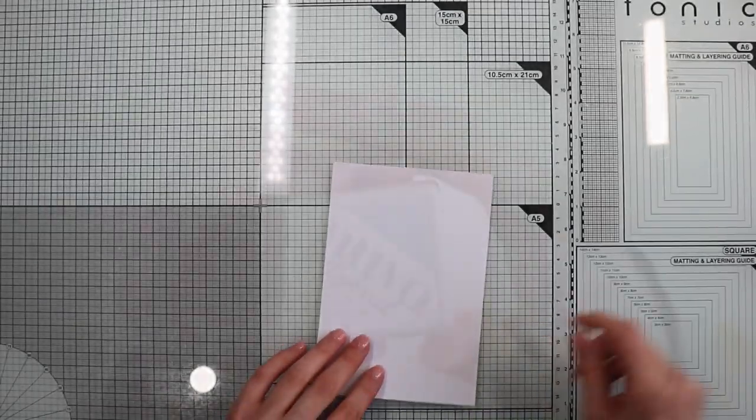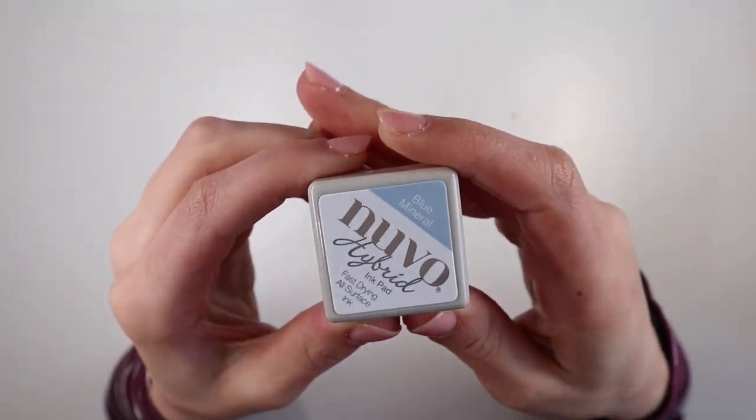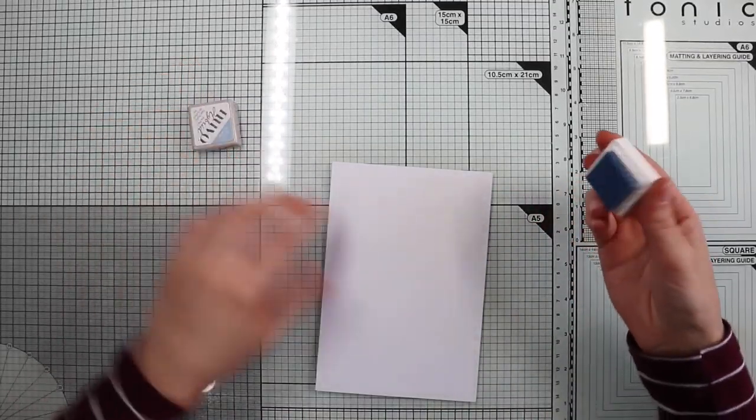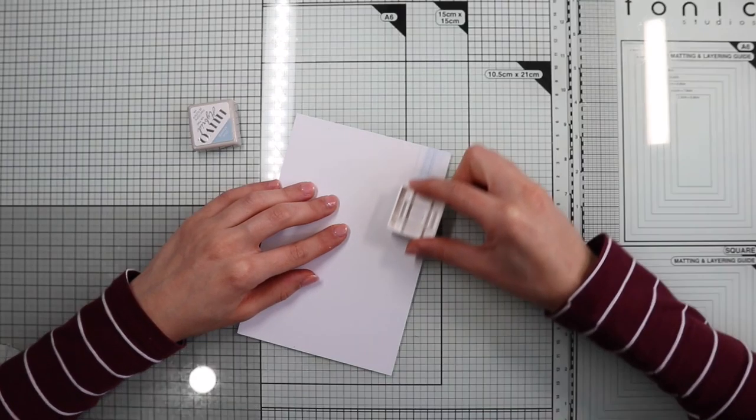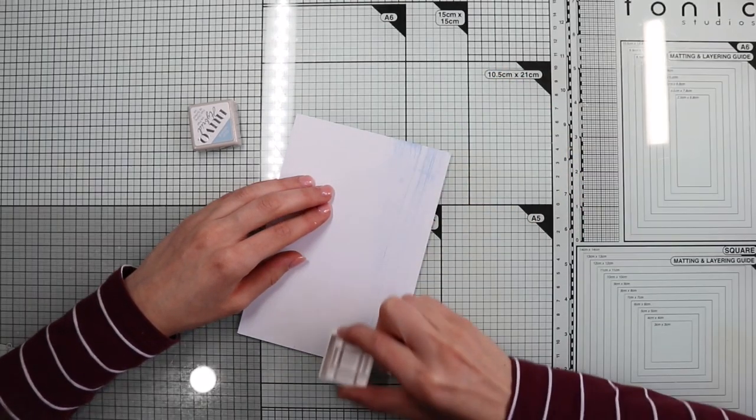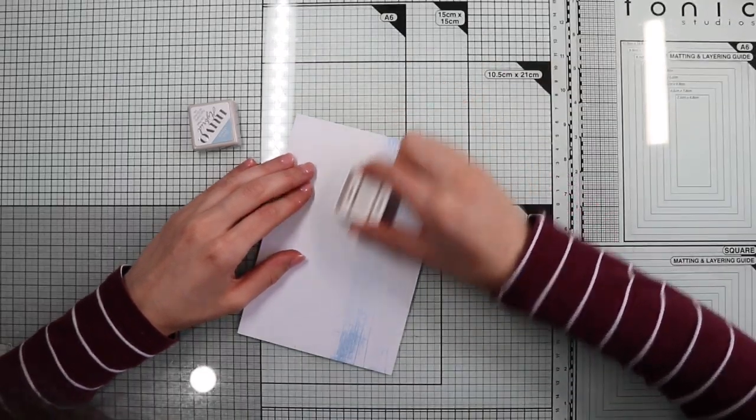Well now, let's create a DIY background. One technique I really like is to swipe an ink pad directly onto the paper. If you make straight movements in one direction, you get a beautiful effect similar to the grain of the wood.